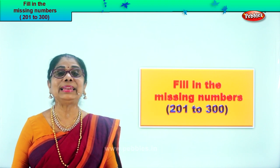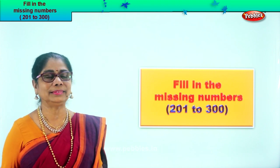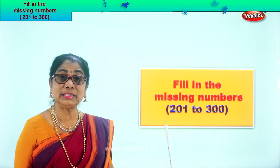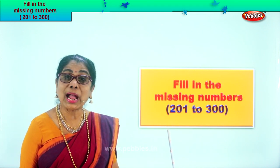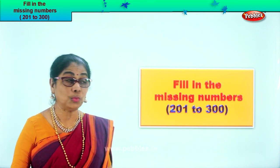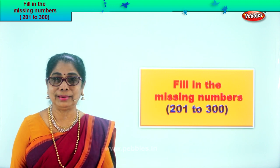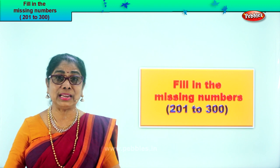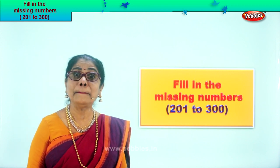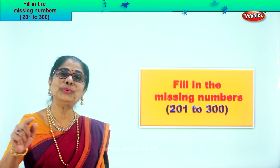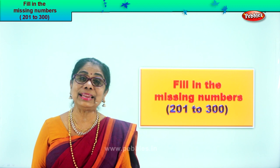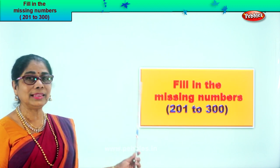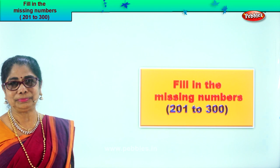Hi children, let us learn to fill in the missing numbers from two hundred and one to three hundred. On the board, numbers will appear with several numbers missing, and you are going to say aloud and fill them in. It's a very interesting exercise. Here we are, okay?